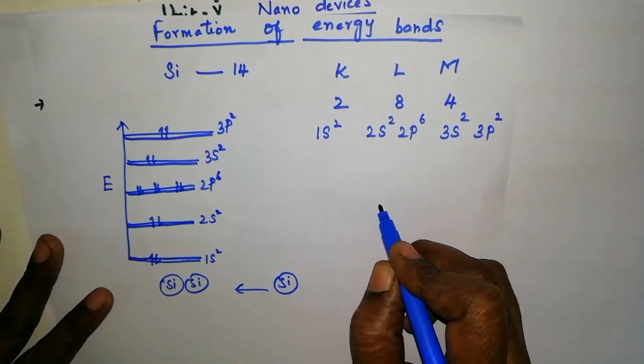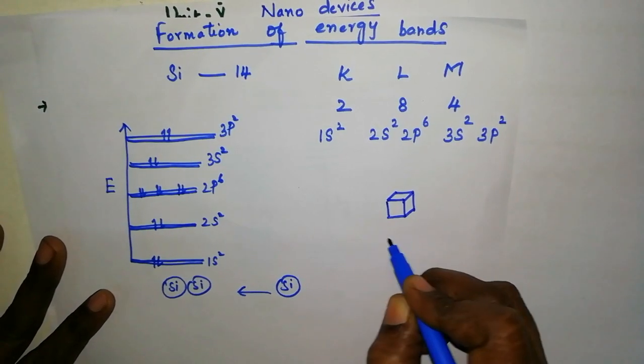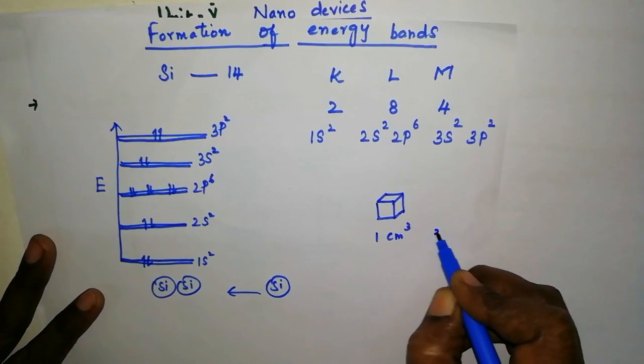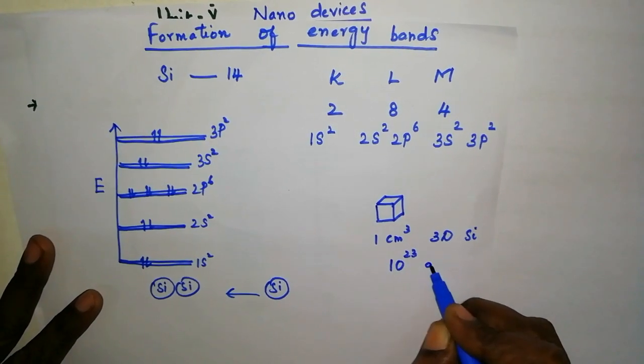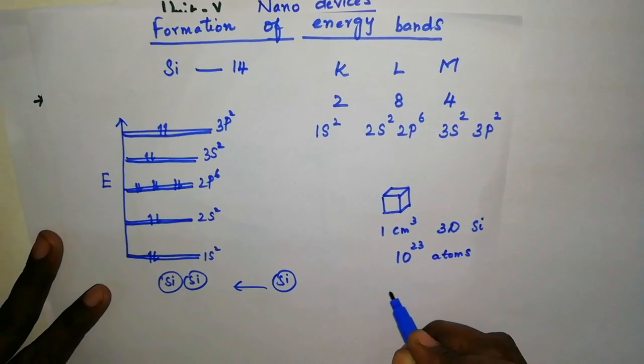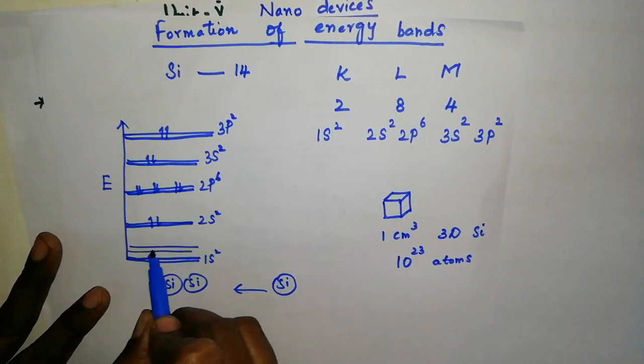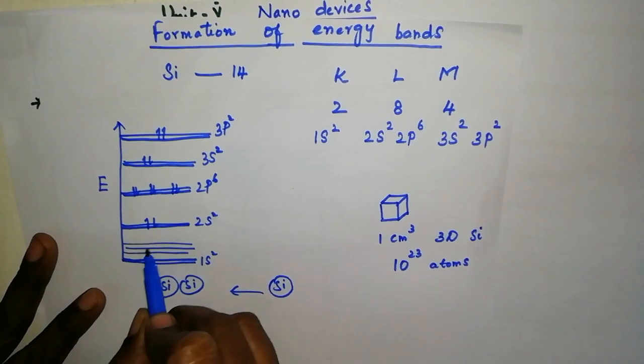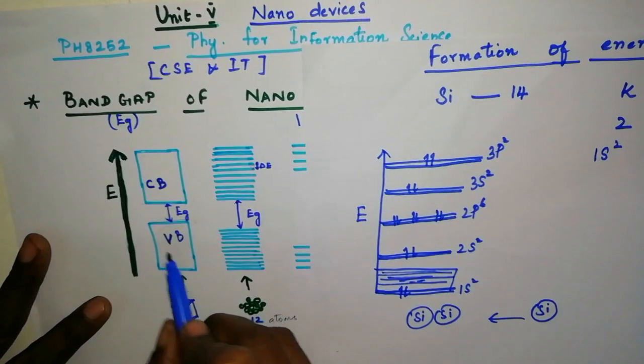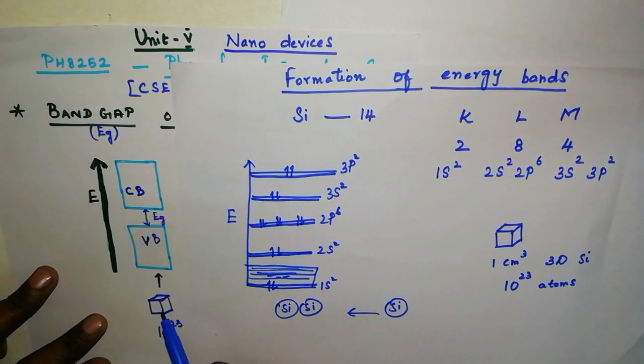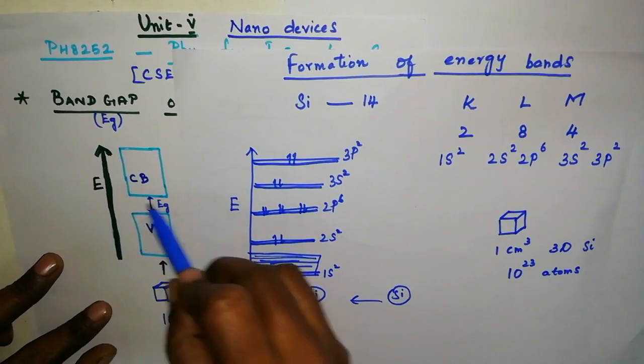Consider a bulk silicon material, a 3-dimensional solid. 1 cm cube volume of a 3-dimensional solid material consists of 10 power 23 atoms. Then, 10 power 23 closely spaced energy levels are formed. Instead, they merge together and an energy band is formed. Thus, a bulk material has thick energy bands due to merging of adjacent energy levels of these large volume of atoms.